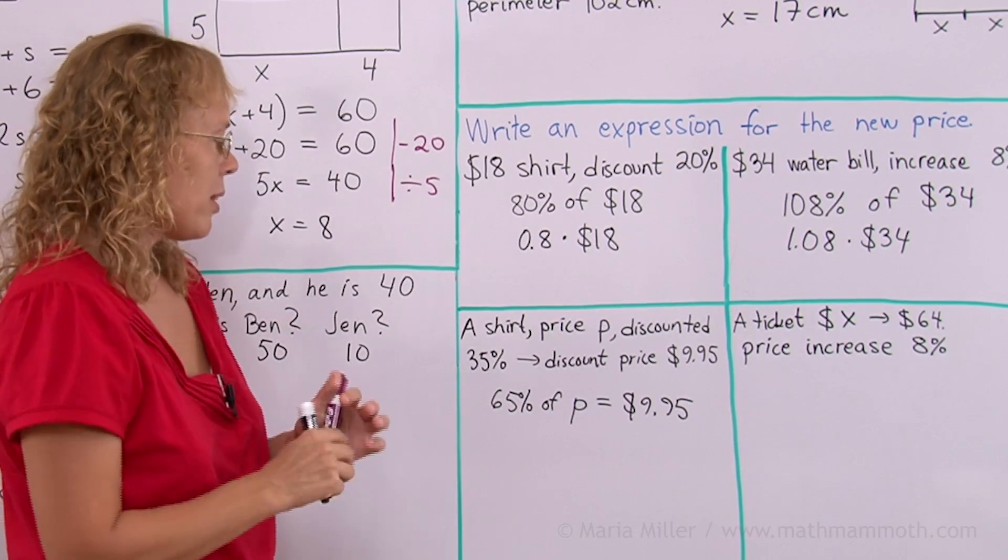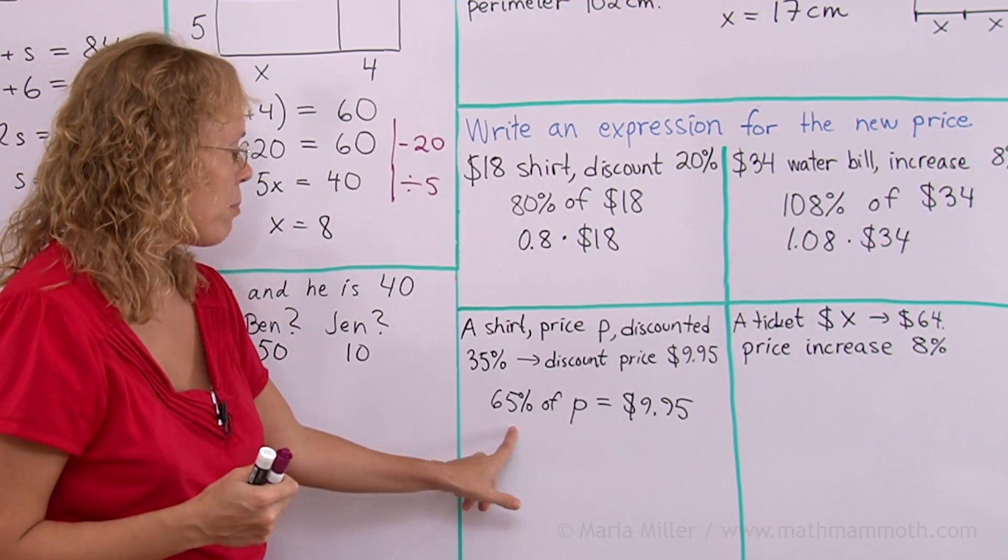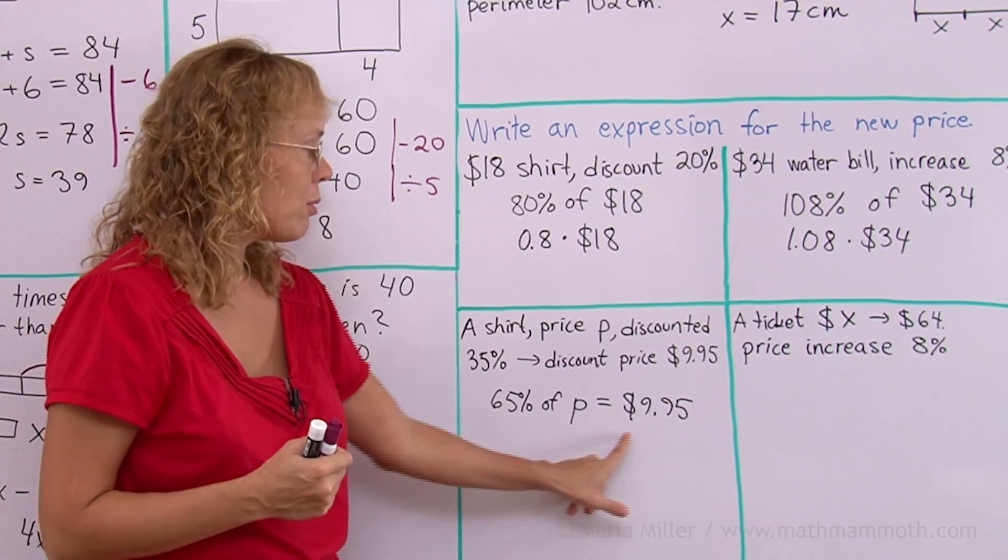And the discounted price we do know. Think about this very carefully until you understand it clearly. 65% of the original price will give you the discounted price.